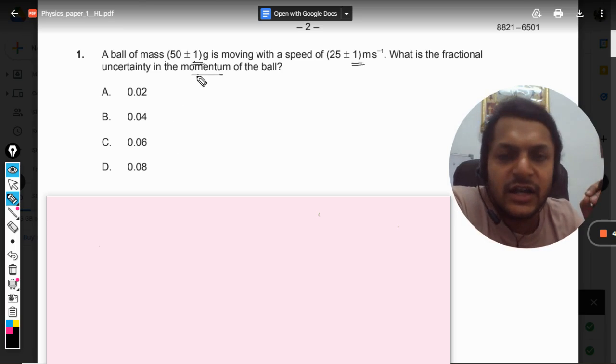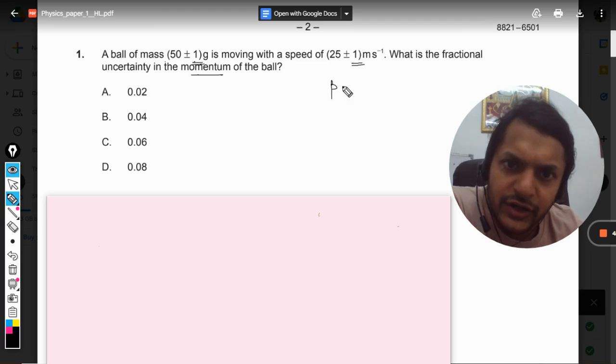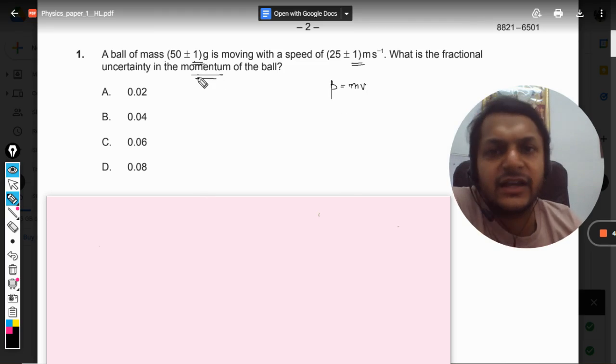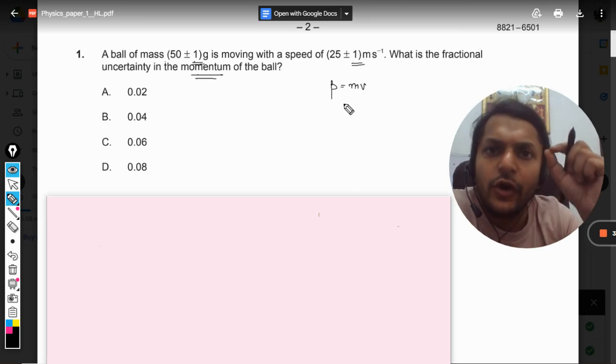This is momentum, so we must know the formula for it: p = mv. This can be anything they can give you, any formula. You must be knowing those formulas. Now p equals mv, and I'll give you one formula for the fractional uncertainty.